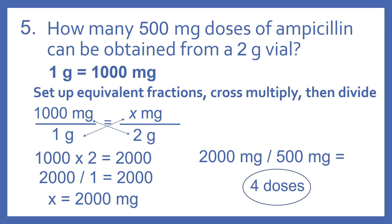So we have 500 milligram doses of the ampicillin. We take the 2,000 milligrams and divide that by 500 milligrams, and that gives us four doses.